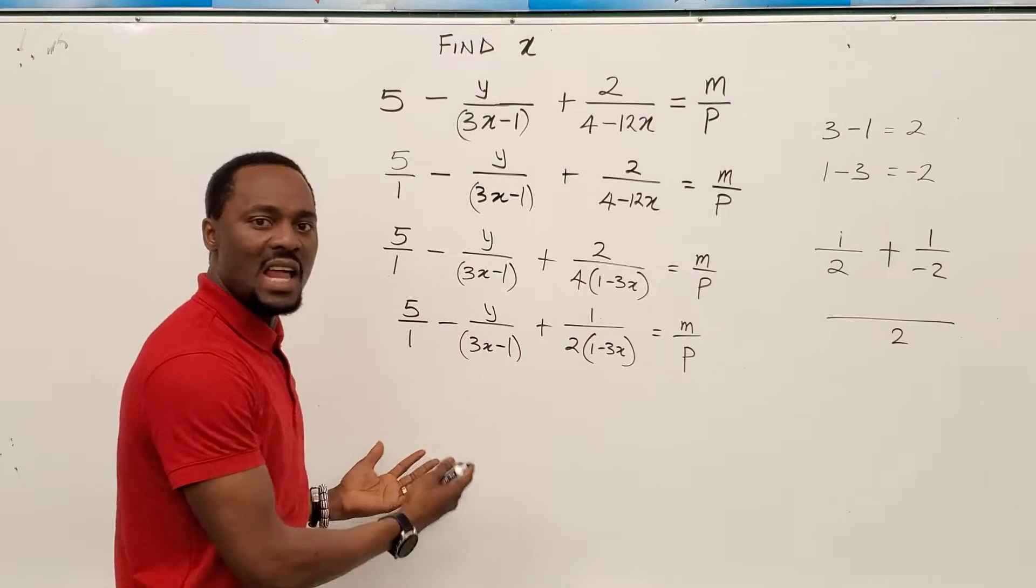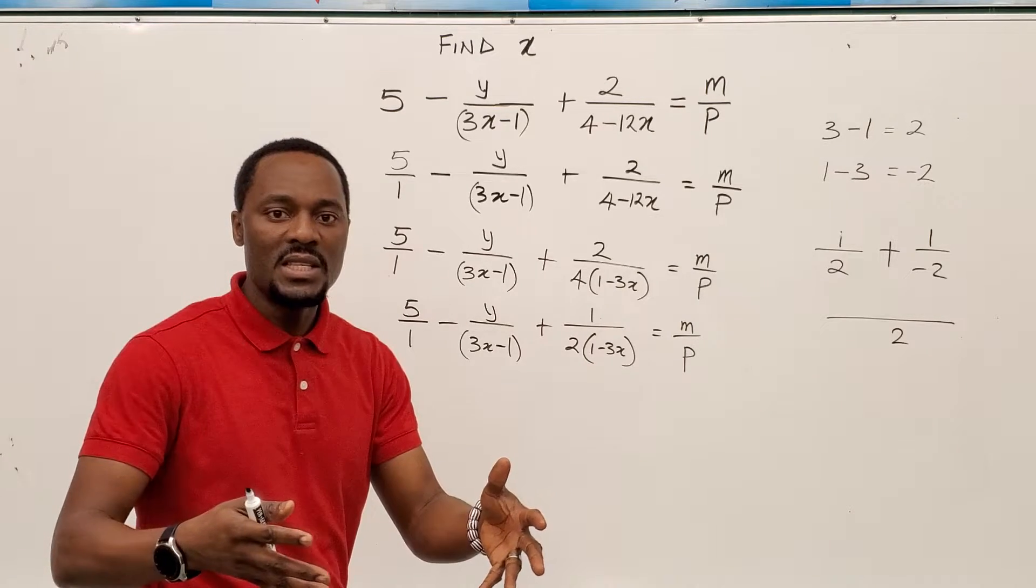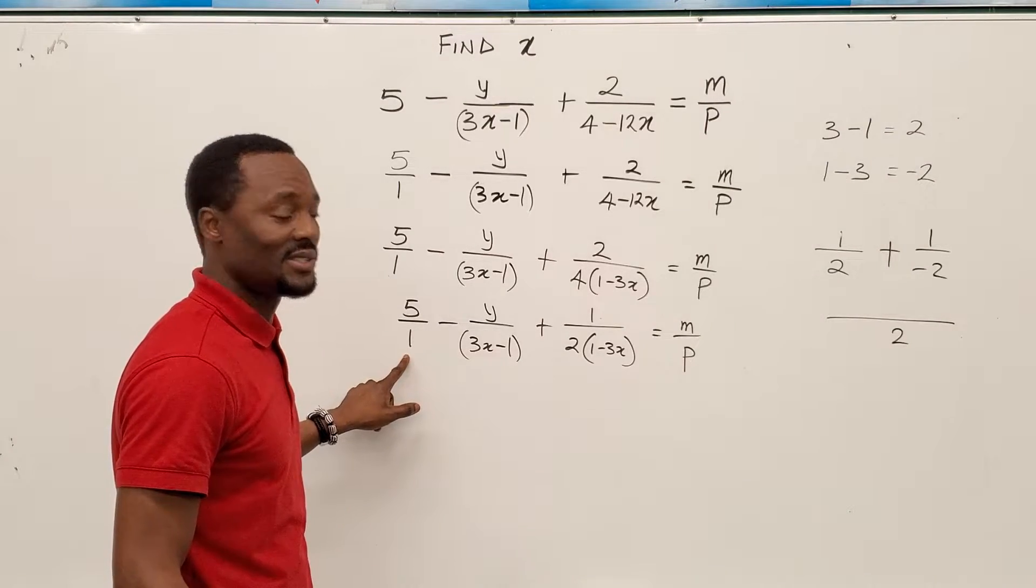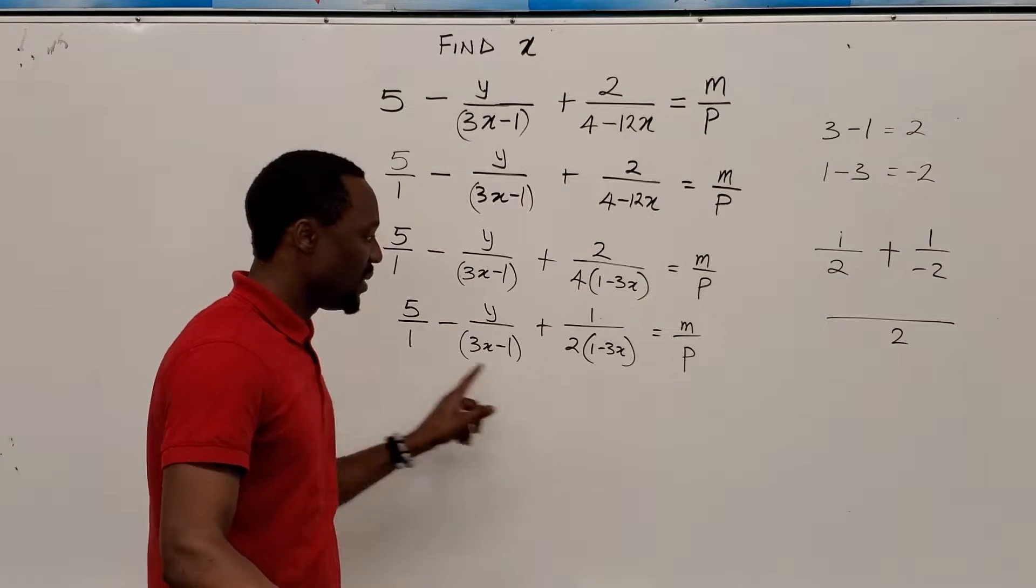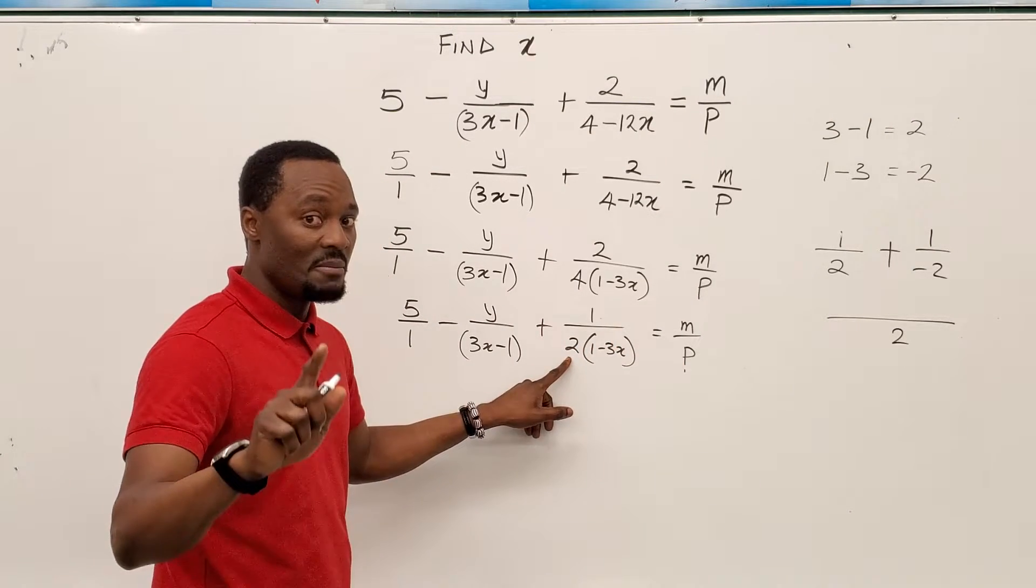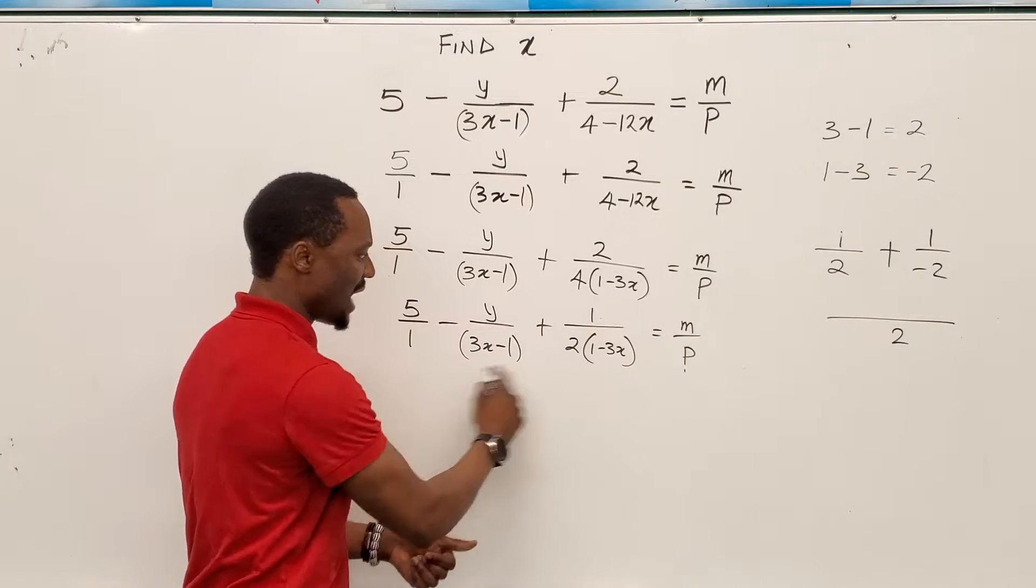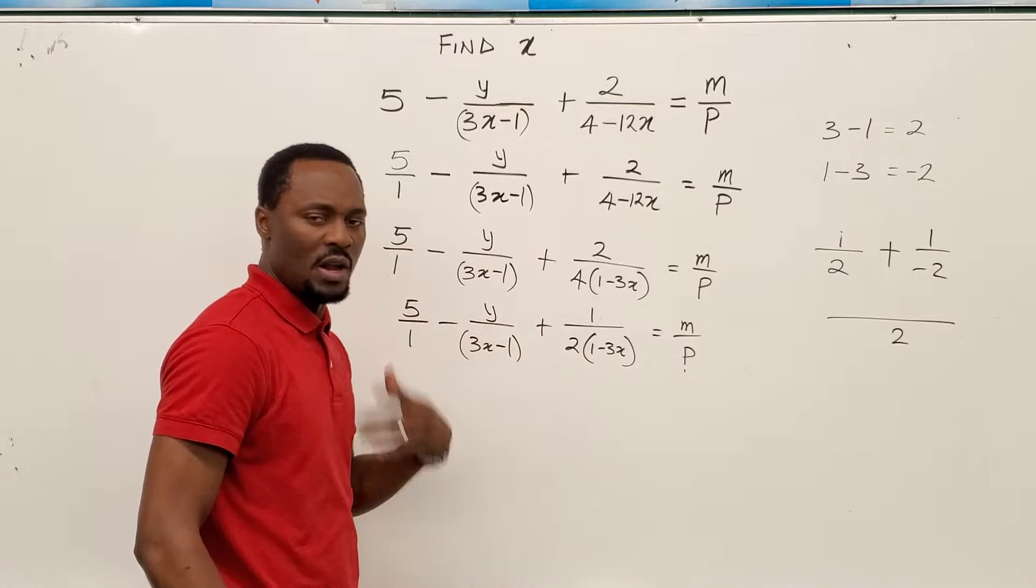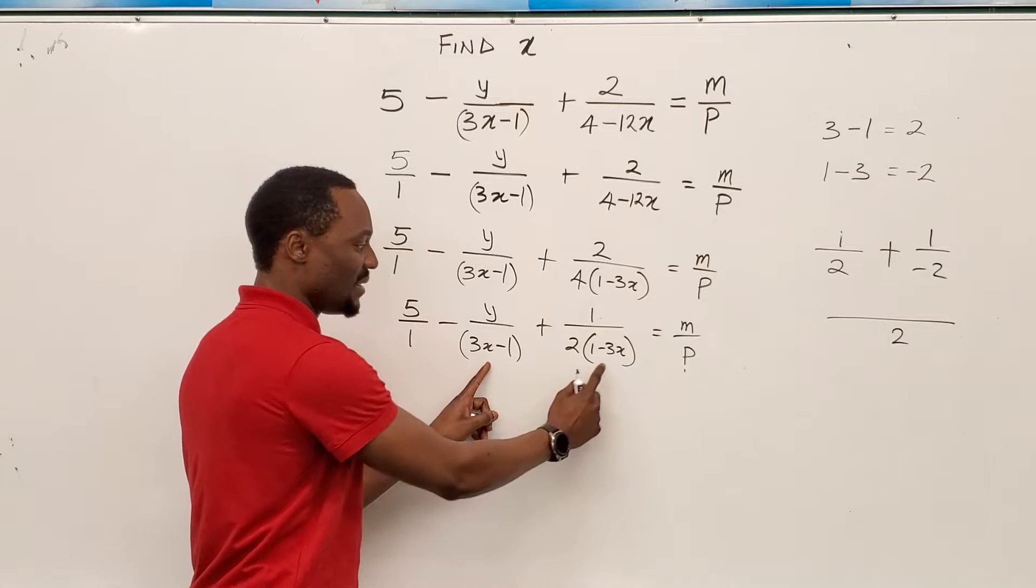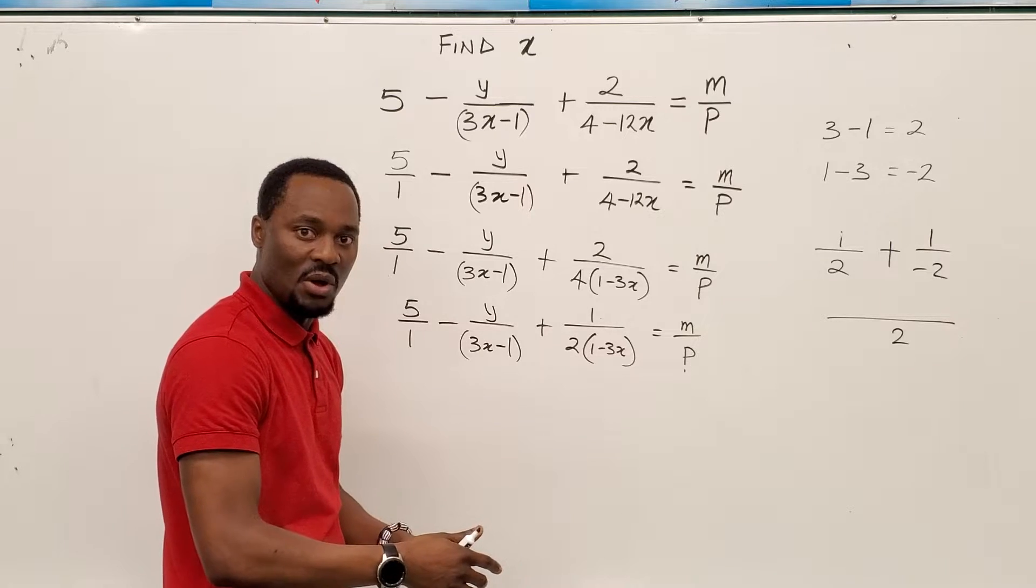So when we get here, you're going to ask yourself, how many elements are in the denominators that you could use to form the least common multiple? Well, I know there is a 1 that never makes a difference. There is a P that makes a difference. There is a 2 that makes a difference. And there is this and this, but I can assume I can take just one of them. Since this one already has a partner, I'm just going to take it because this and this have the same absolute values. So I just take it as the least common multiple.